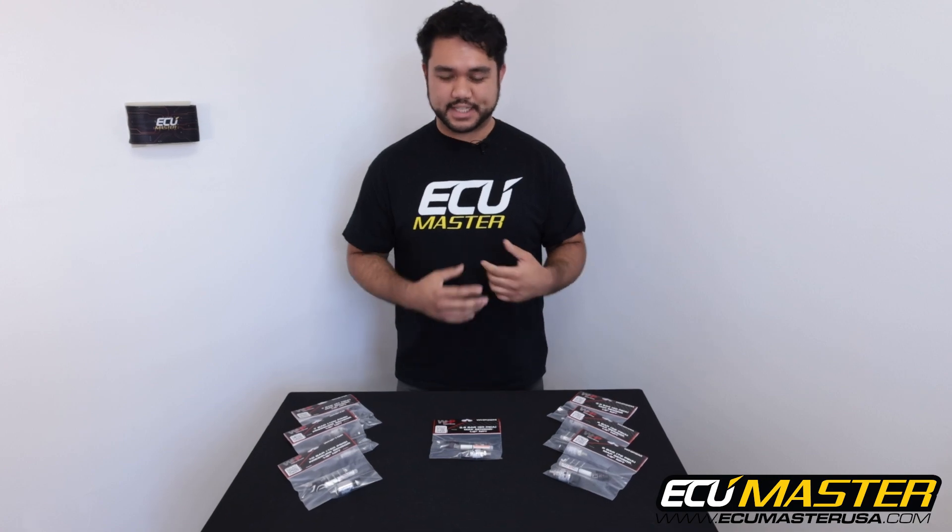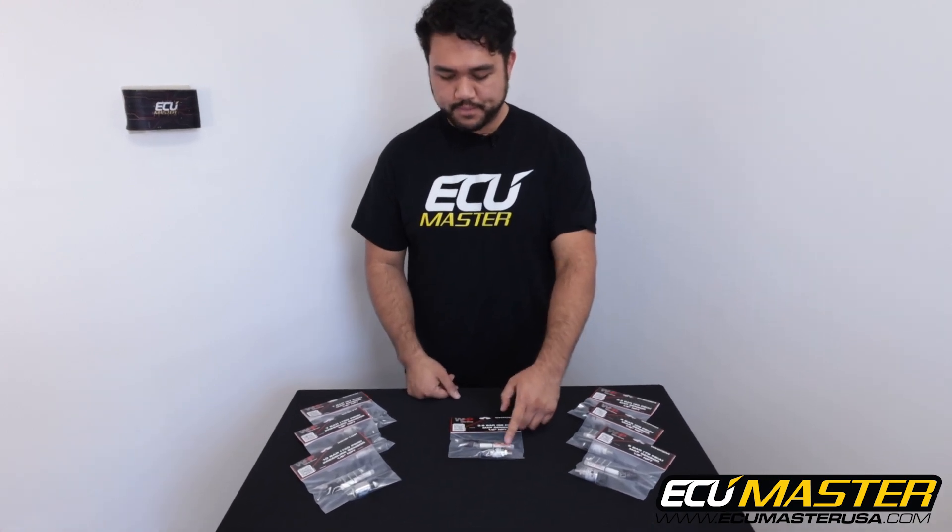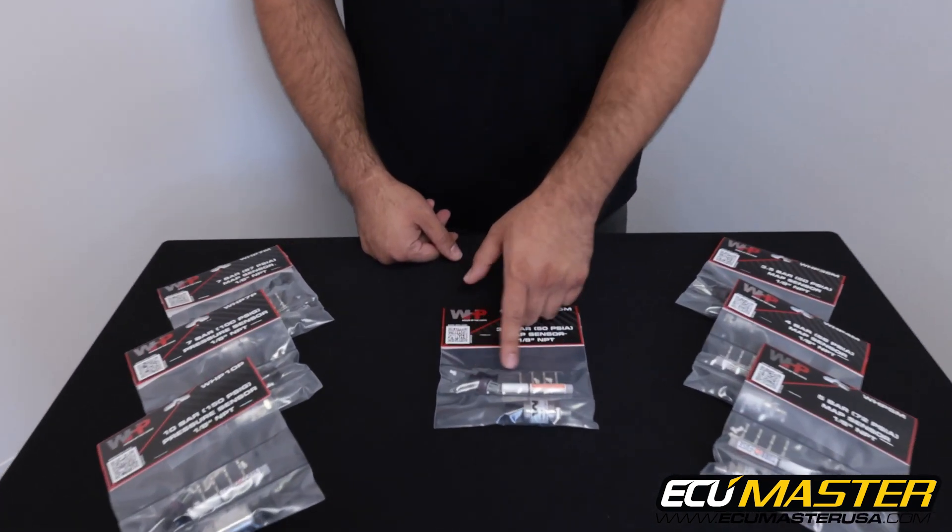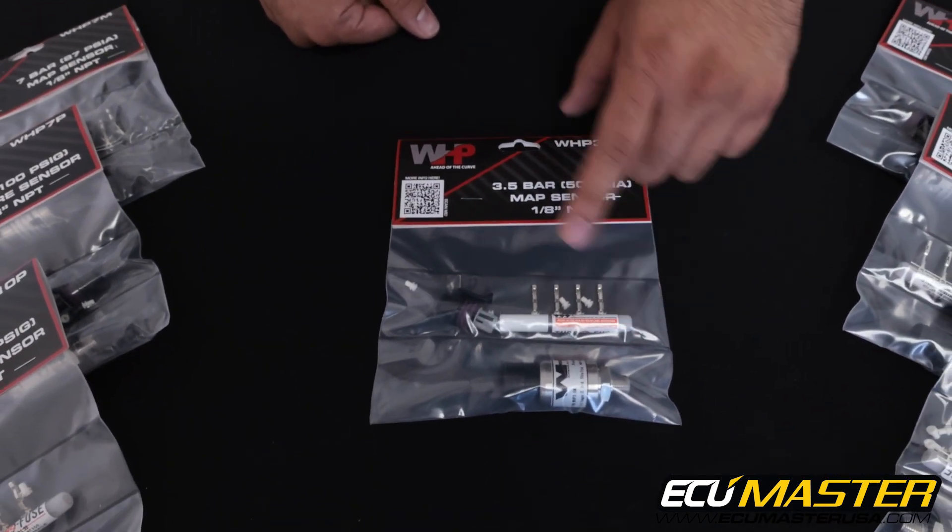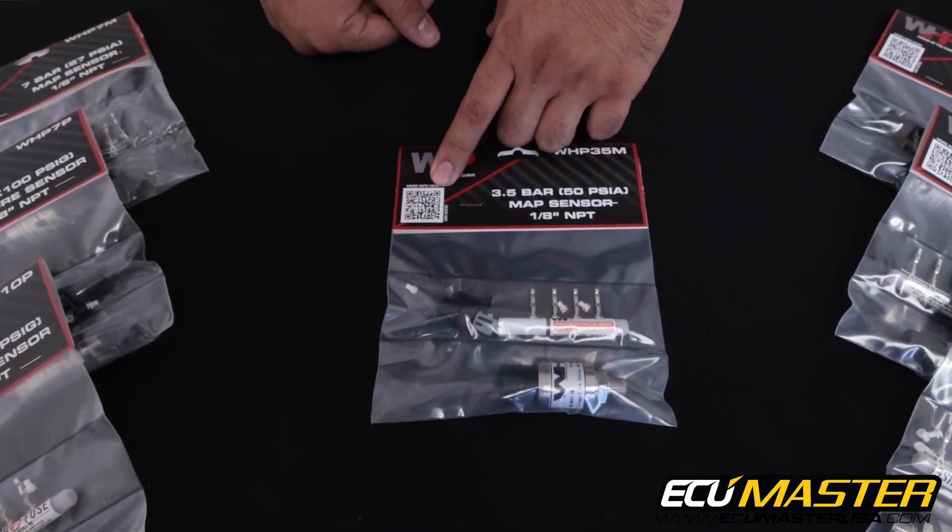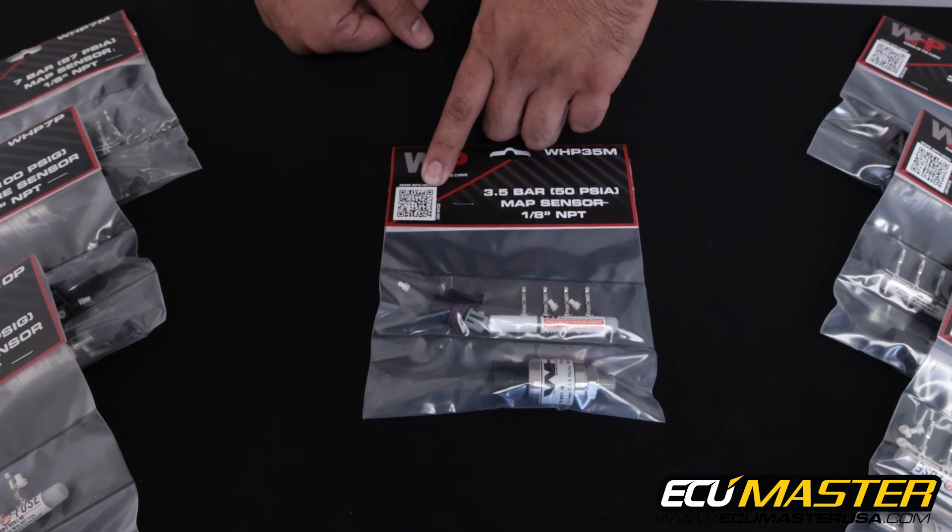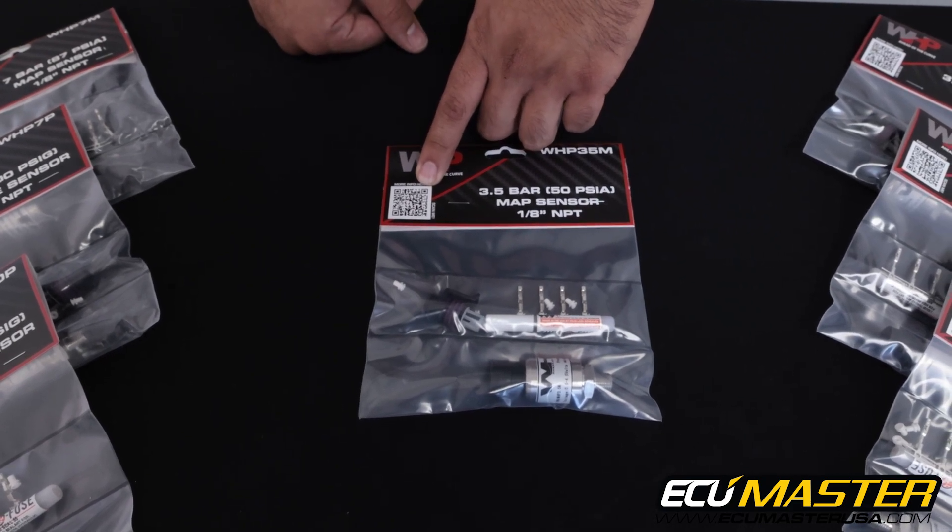With each of our sensor kits you're going to get the sensor that you ordered, the connector, seals, terminals, and thread sealant. You'll also find on the front of each package the QR code that'll link you directly to any pertinent sensor information you might need.